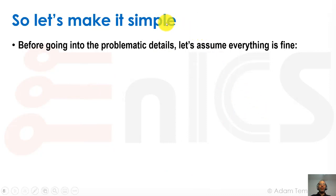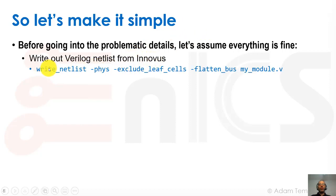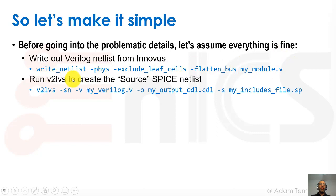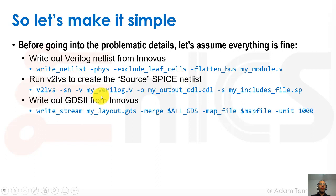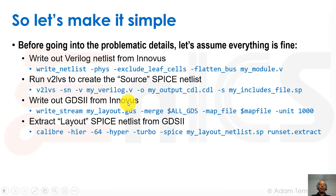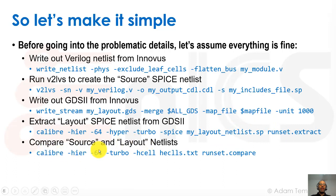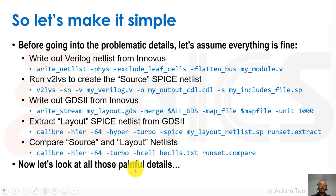Just before we start, here's a simple overview of the flow assuming everything is fine. We take our Inovus place and route tool and run write netlist with various options, then run V2LVS on the netlist to create our SPICE netlist. Then we write out our GDS from Inovus using the write stream command, then extract the layout from the GDS using Calibre to get the extracted SPICE netlist. Then we compare the source and layout netlists — also with Calibre. These last two steps can be done in one shot, which I'll explain later. Now we're going to go into each of these steps in detail, highlighting many of the problems, solutions, and workarounds for them.